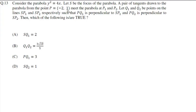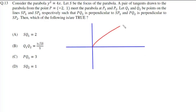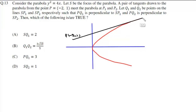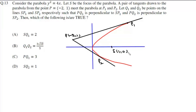Consider the parabola y squared equals 4x. We have this parabola and a point P at minus 2 comma 1. From this point, tangents are drawn to the parabola, which touch it at points P1 and P2. The focus of this parabola is S, and since A is 1, the focus is at 1 comma 0.